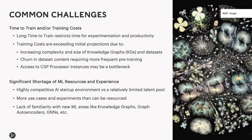They're also seeing higher churn in dataset content, requiring more frequent pre-training, and more limited access to cloud service provider processor resources than originally anticipated. The second key challenge is a significant shortfall of machine learning resources and experience. It's a highly competitive AI startup environment where teams are vying for the same relatively limited talent pool. There are definitely more use cases and experiments than they can possibly resource at this point in time. They're also finding a lack of familiarity with newer machine learning areas like graph neural networks, knowledge graphs, and knowledge graph embedding models.